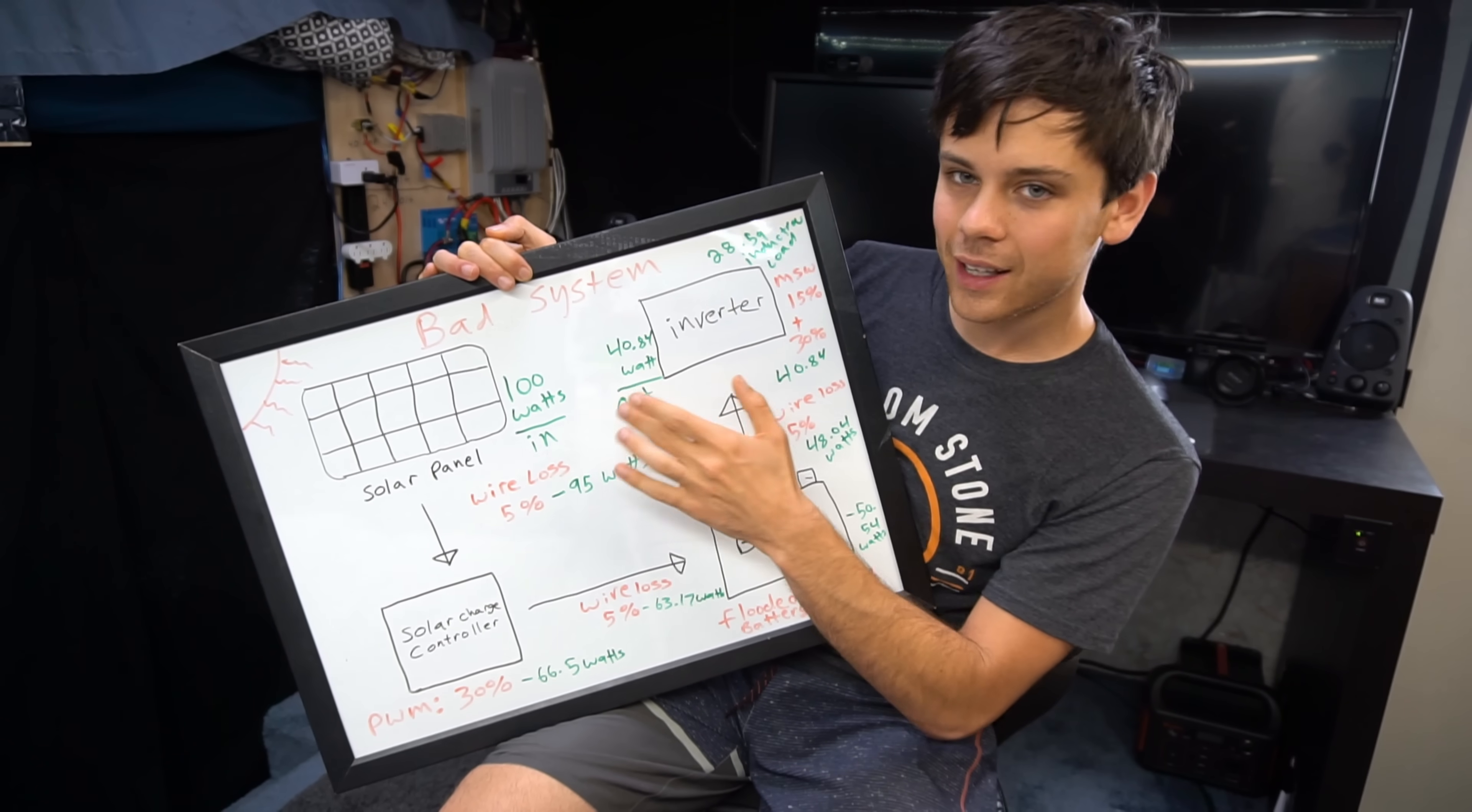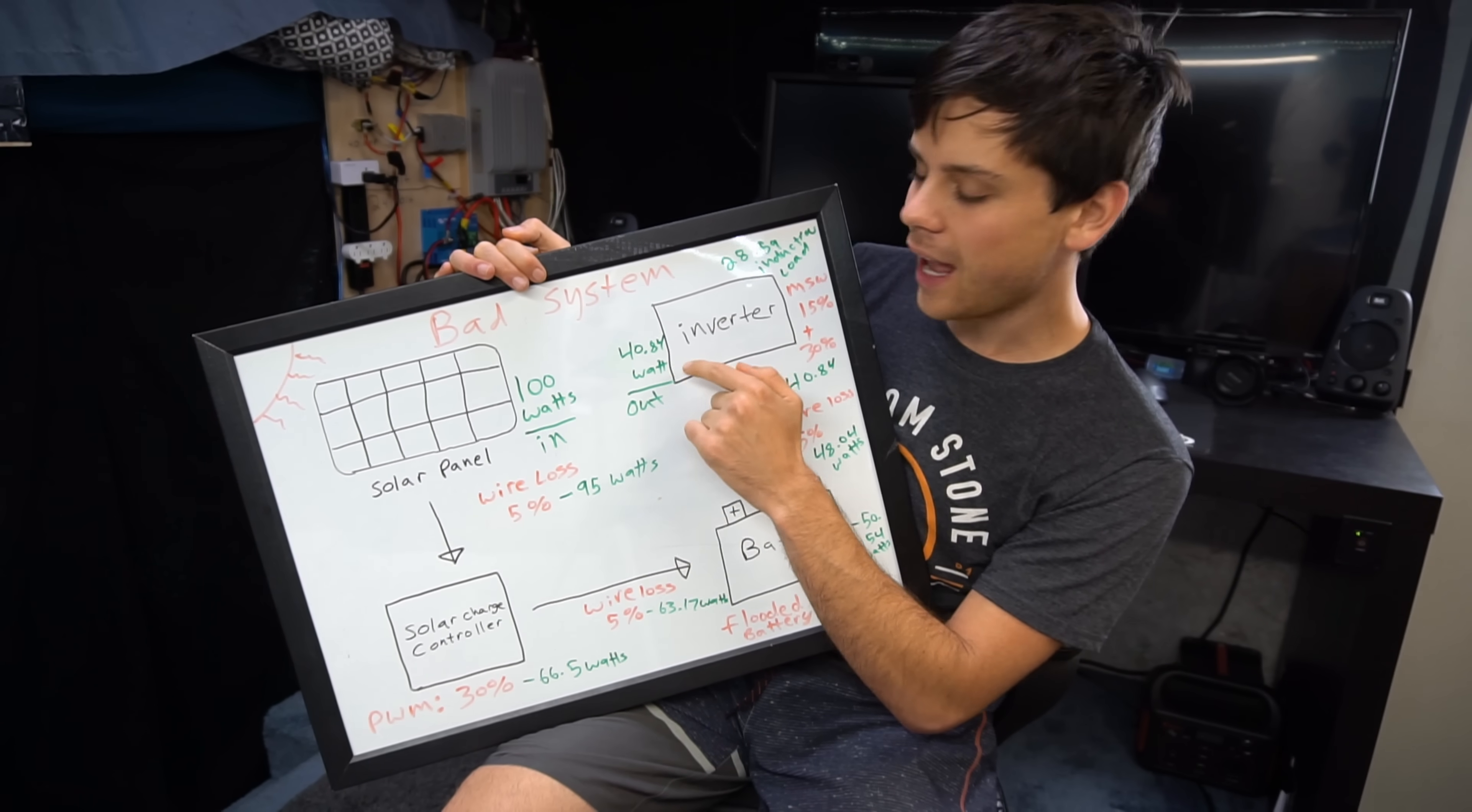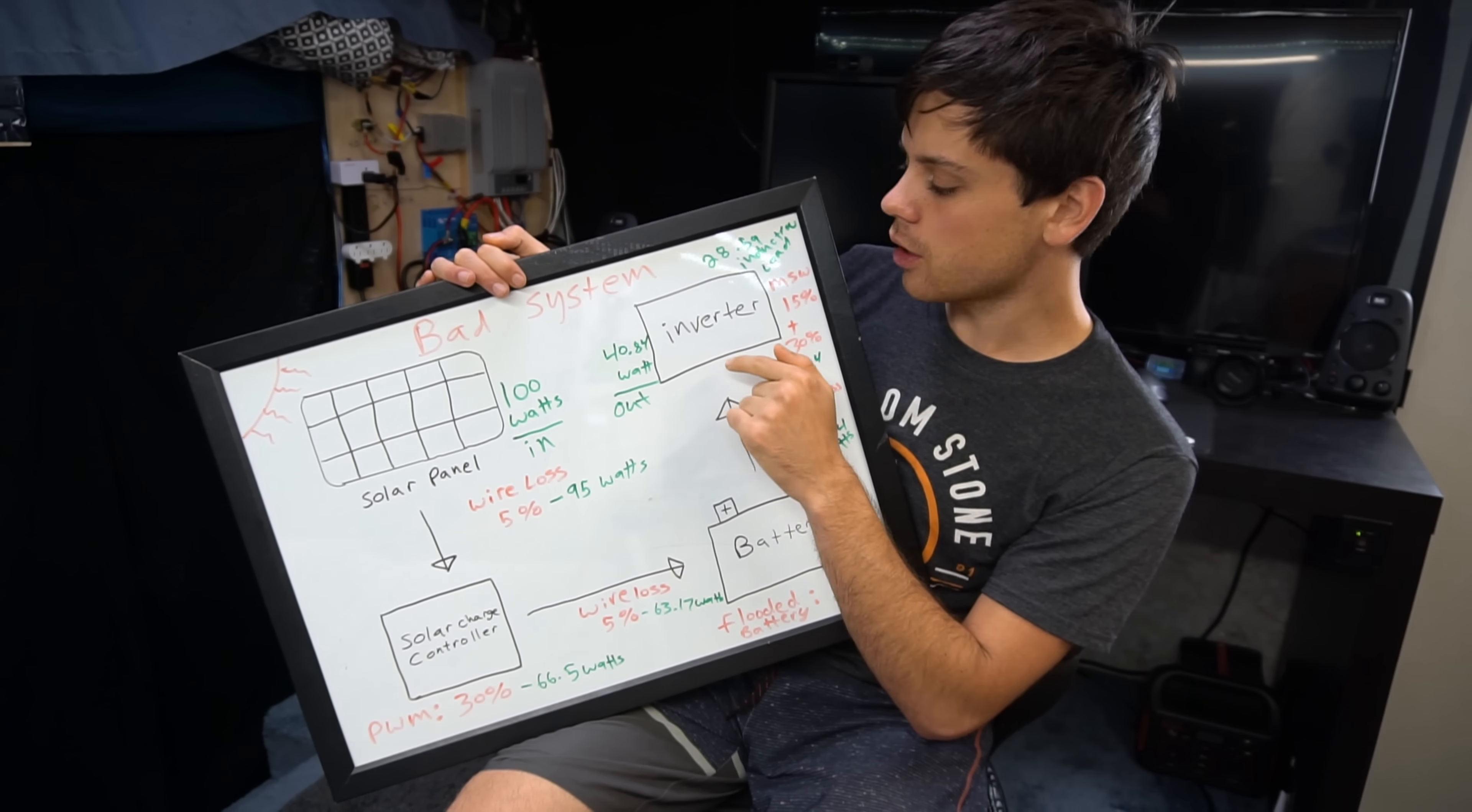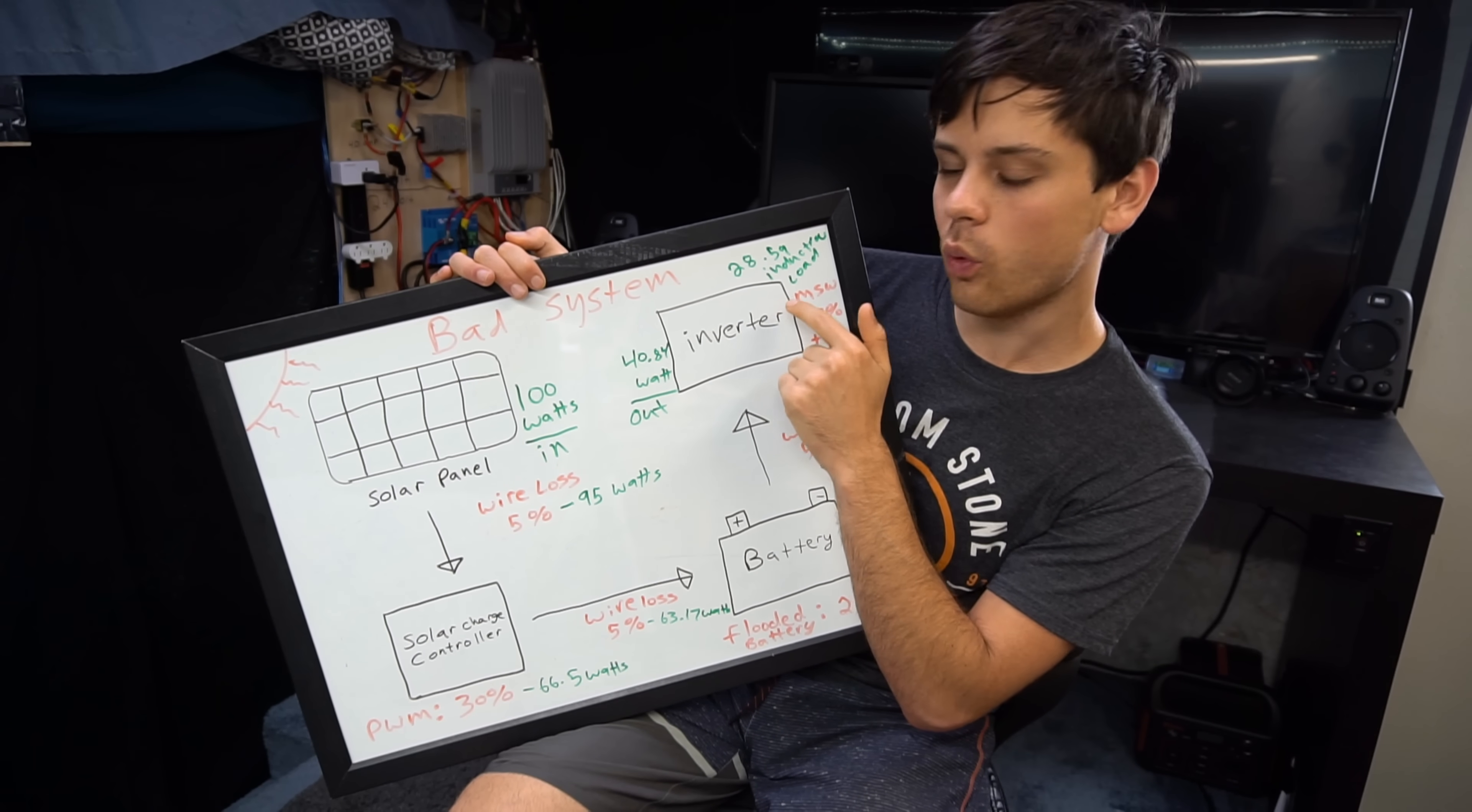So what we get at the end of the day after we store it and after we do all of these conversion processes is 40.84 watts coming out of the inverter. If you run an induction load through this inverter you're going to incur another 30 percent and that will give you a power of 28.59 watts.